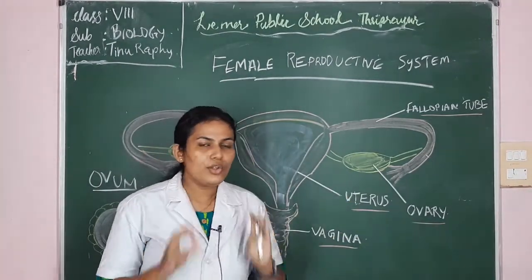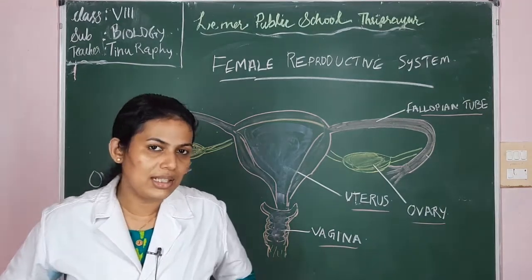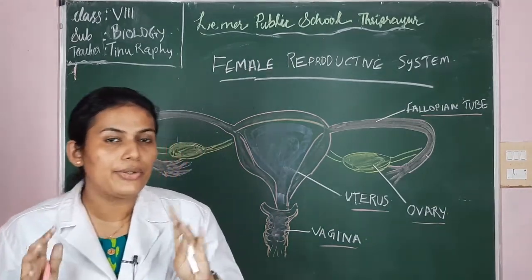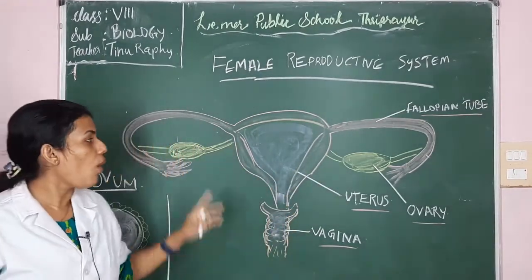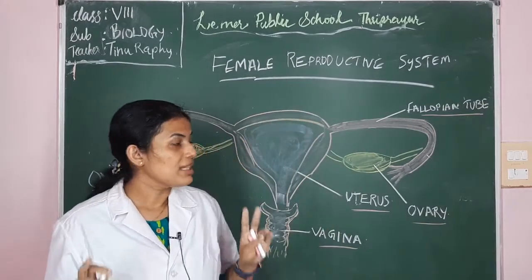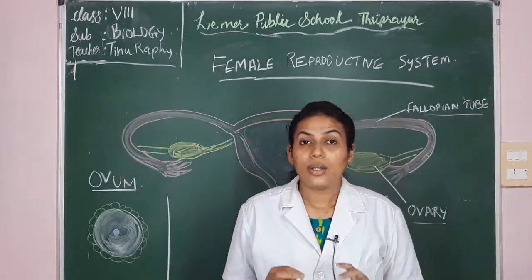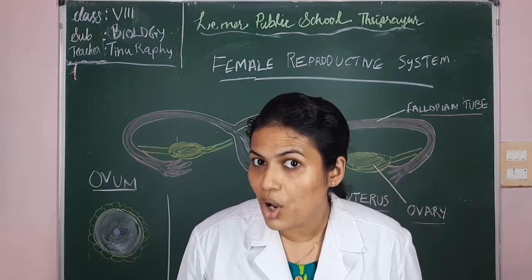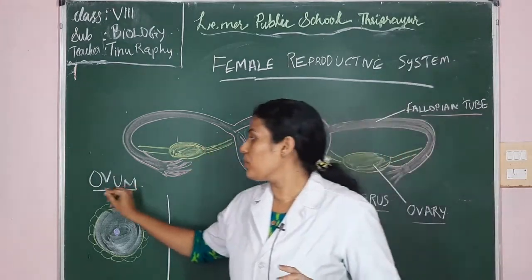The first part is the ovary. In human females, the ovary is situated below the kidney in the abdominal region. There is a pair — two ovaries — for a female. Just as a human male has two testes, a human female has a pair of two ovaries. The function of the ovaries is to produce female gametes, called ovum.